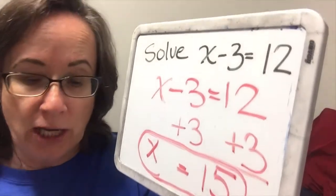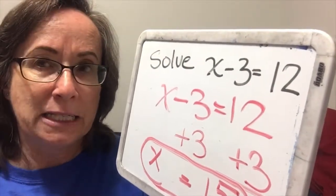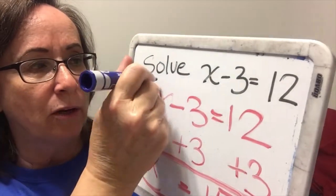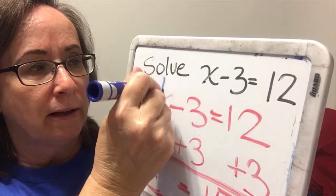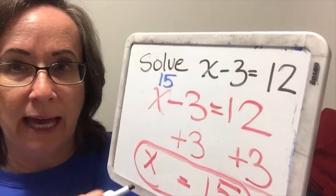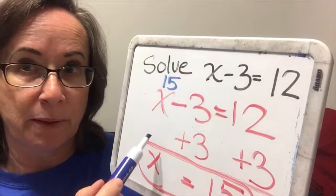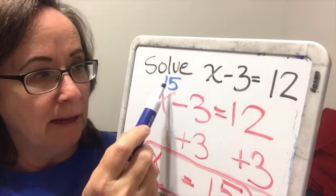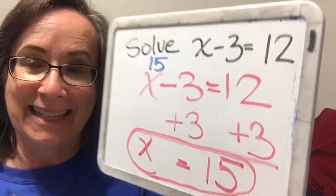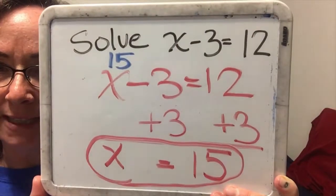So let's add these together. X does not have anything to add to. Negative 3 plus 3 is 0, and 12 plus 3 is 15. This equation is equivalent to the one I started with, because I used the addition property of equality, which yields only equivalent equations. Let's check: plug 15 back in for x — 15 take away 3 is 12. Yes, that's right. So we have a solution.